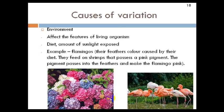The hydrangea flower is another example — the environment in which it is grown affects its petal colour. Hydrangeas growing in acidic soil will be pinkish in colour, while those with bluish or purplish petals tend to grow in alkaline soil. Those with no colour may be growing in neutral pH soil. That's it for the topic of variation and classification.